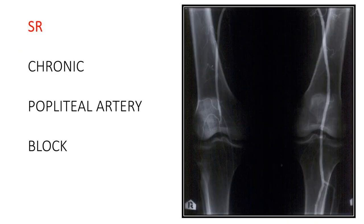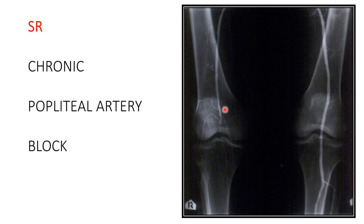Another angiography case shows the popliteal dividing into anterior tibial and tibioperoneal trunk on one side. The contralateral side shows a rest of dye at the popliteal joint level with collaterals arising from the proximal arterial segment attempting to overcome the stenotic area. The presence of collaterals signifies a chronic condition.